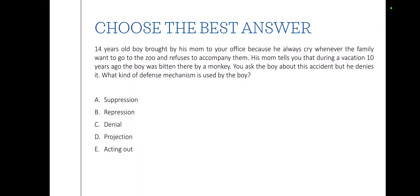Projection is another defense mechanism. Somebody is doing something wrong and feels bad about it, but relieves himself by saying the other person is the reason or is doing the same thing. The most famous example: a spouse who is cheating on their partner feels bad, but whenever someone asks, they say it's because their partner is doing that — projecting their unacceptable actions onto surrounding people.